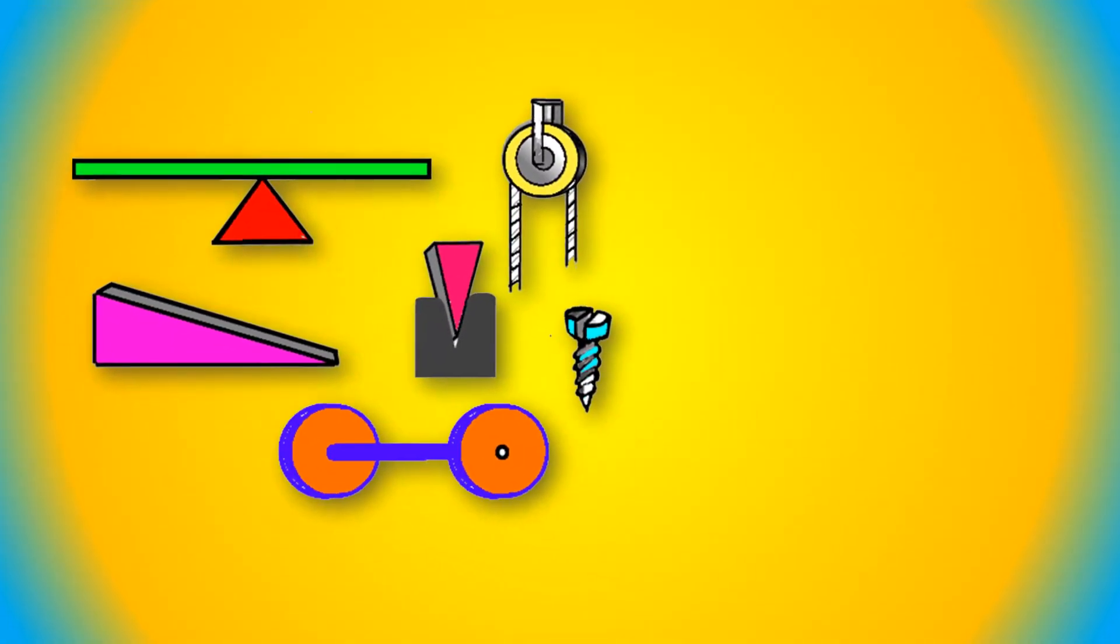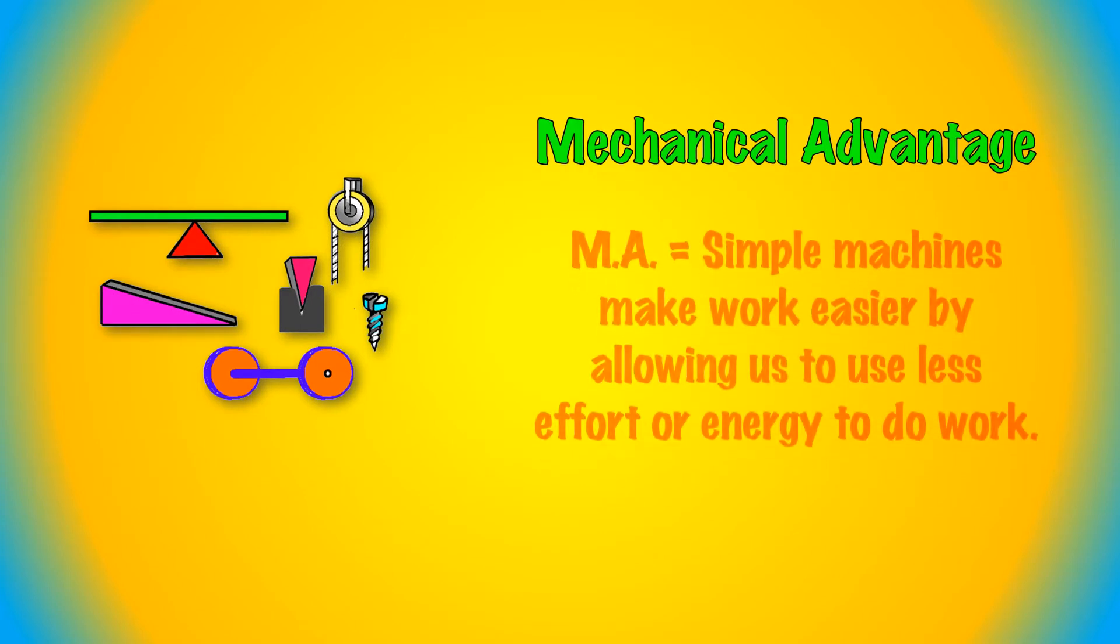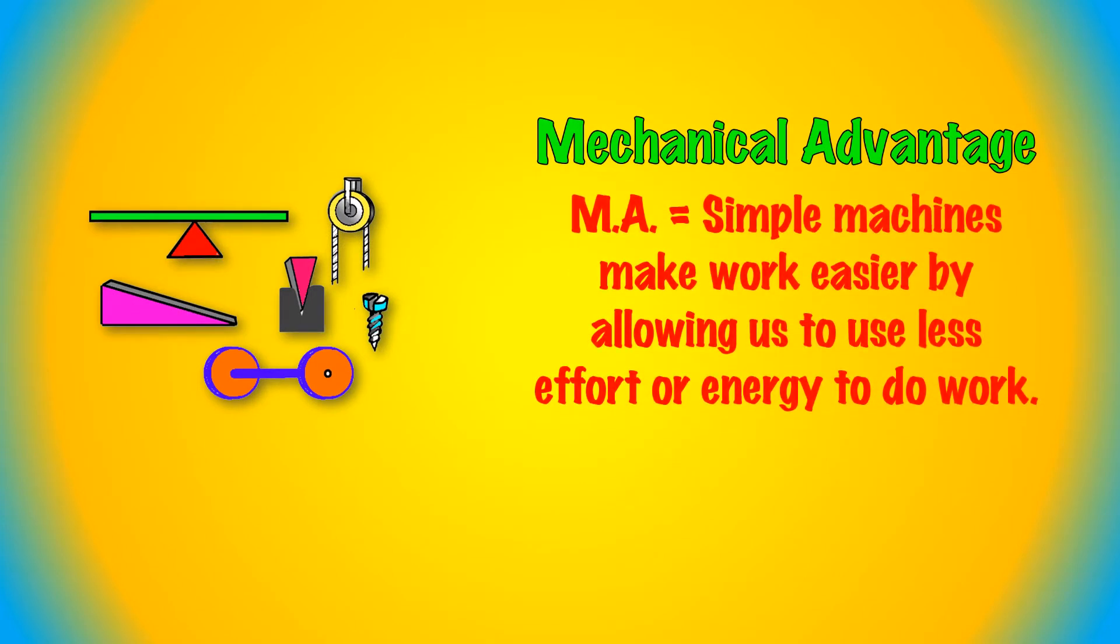Simple machines are useful because they give us a mechanical advantage. That means that they help us to use less effort or energy when doing work. The term mechanical advantage may be abbreviated as MA.